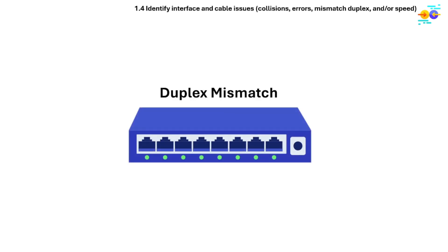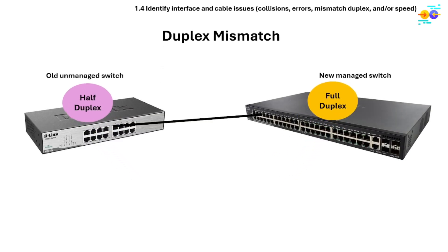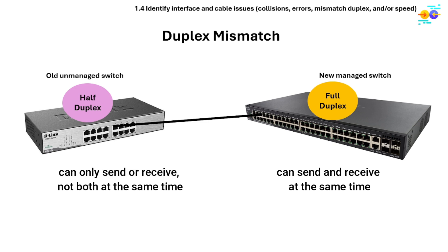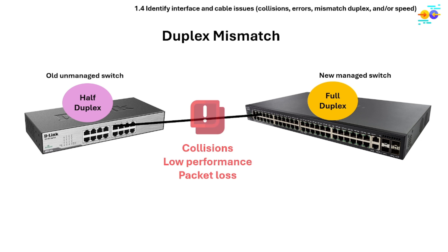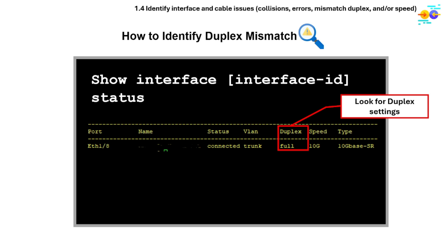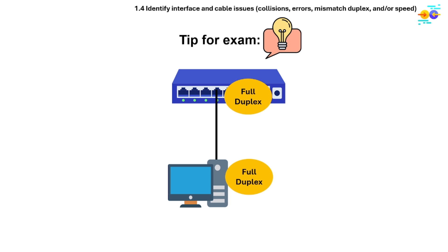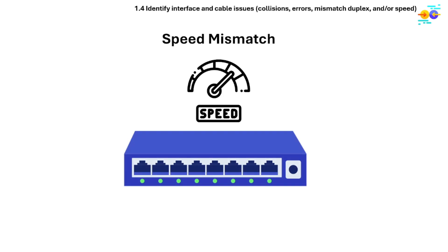Duplex mismatch happens when two connected devices have different duplex settings — one set to full duplex, which can send and receive simultaneously, and the other set to half duplex, which can only do one at a time. The result is collisions, low performance, and packet loss. To identify duplex mismatch, use the show interface [interface-id] status command and look for duplex settings or frequent late collisions. For the exam, always match duplex settings on both ends and use auto-negotiation when possible.